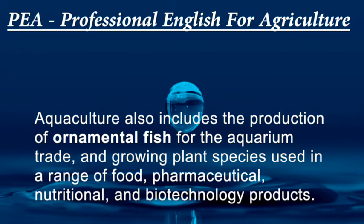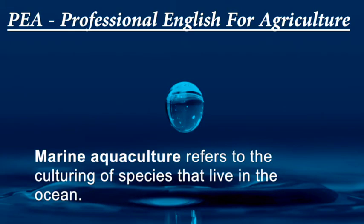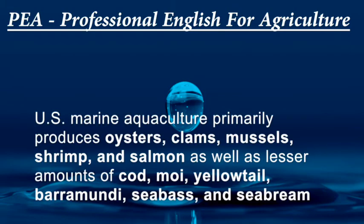Aquaculture also includes the production of ornamental fish for the aquarium trade, and growing plant species used in a range of food, pharmaceutical, nutritional, and biotechnology products. Marine aquaculture refers to the culturing of species that live in the ocean.